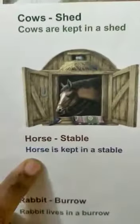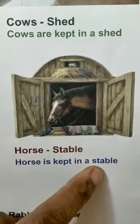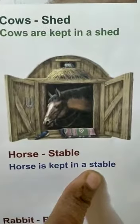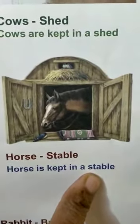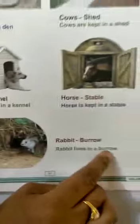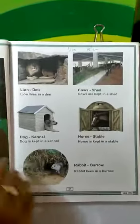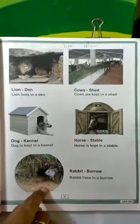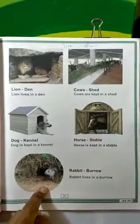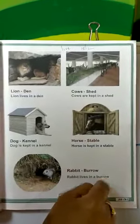Horse. Horse is kept in a stable. Rabbit. Rabbit lives in a burrow — it makes holes under the ground and lives in that burrow.